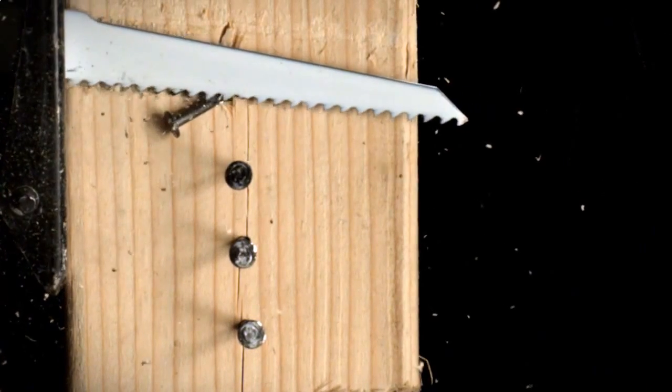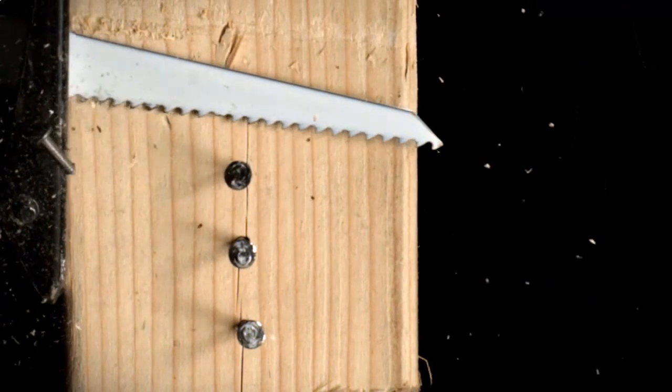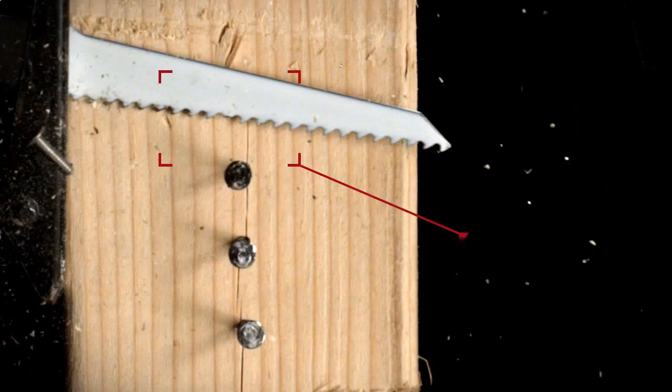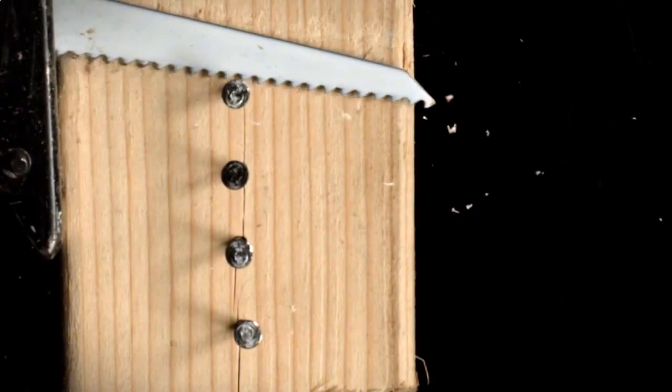Some materials are tough enough to cause severe damage to certain blades. For example, attempt to cut exposed nails with a blade that has an aggressive tooth pattern and you can literally rip the teeth off the blade.